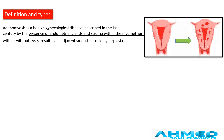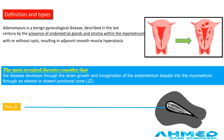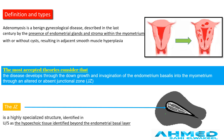Adenomyosis is a benign gynecological disease described in the last century, characterized by the presence of endometrial glands and stroma within the myometrium, with or without cysts, resulting in adjacent smooth muscle hyperplasia. The most accepted theory is that the disease develops through the downgrowth and invagination of the endometrium basalis into the myometrium through an altered or absent junction zone. The junction zone is a highly specialized structure identified on ultrasound as the hypoechoic tissue identified beyond the endometrial basal layer.